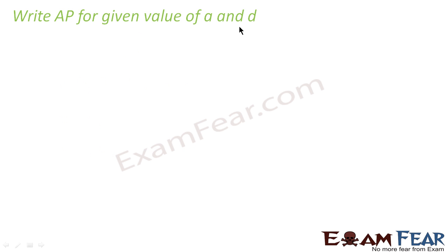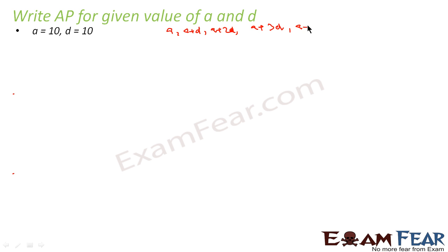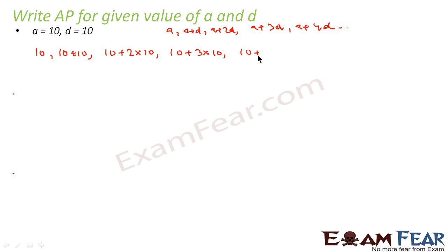In most questions, your main target should be to find the first term and common difference. Let us try an example: A = 10, D = 10. The terms are A, A+D, A+2D, A+3D, A+4D — that is 10, 20, 30, 40, 50, 60, and so on.